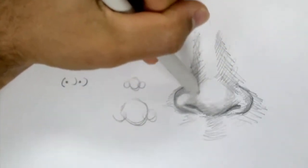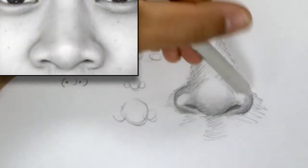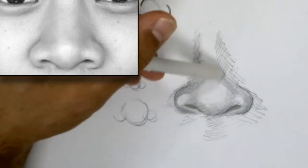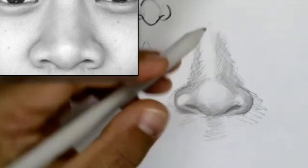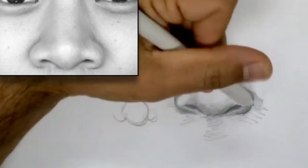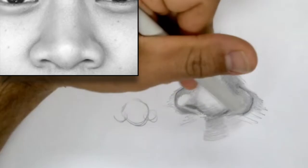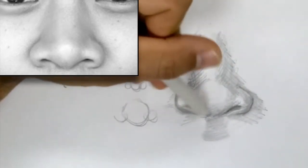You'll notice a nose doesn't have harsh edges; it has transitions, like rounded edges. So we want to soften and blend the edges of our shadows so they help create a rounded look and start to pull out highlights here.